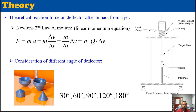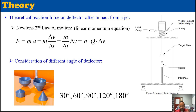Now, if we apply Newton's second law of motion at the deflector, the force is mass times acceleration. With a little modification: acceleration is change in velocity over change in time. If we rearrange, the mass here is the mass of fluid flowing over a certain time interval delta t — so change in mass over time gives us the mass flow rate. Then we multiply by the change in velocity.